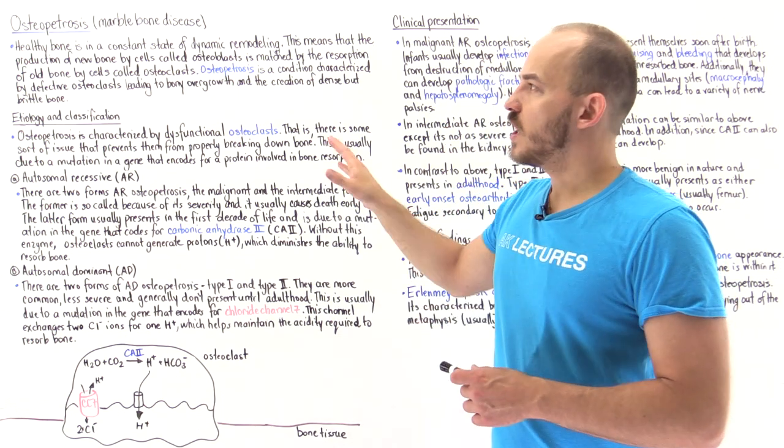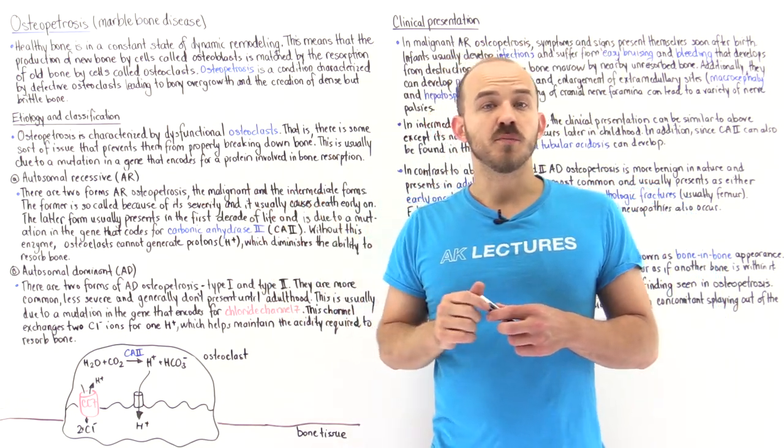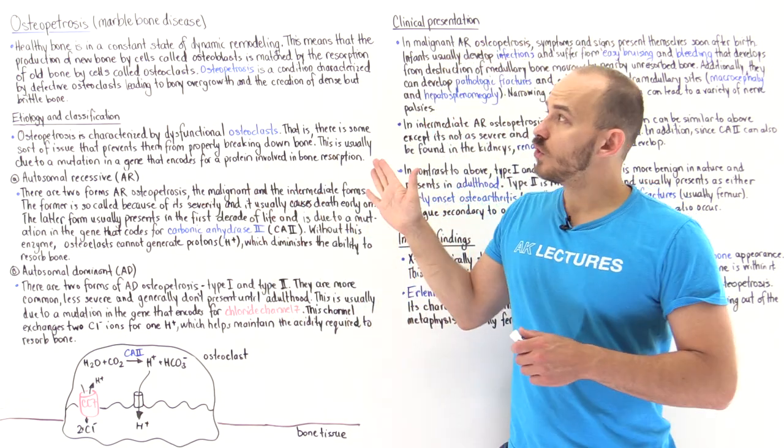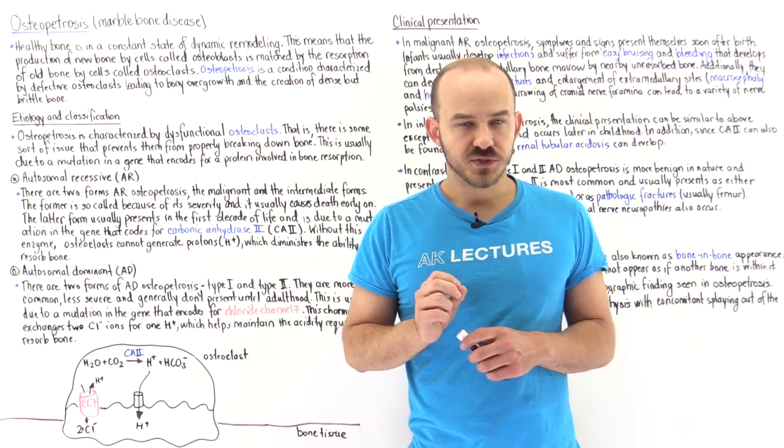The next disease we're going to talk about is something called osteopetrosis, also known as marble bone disease.